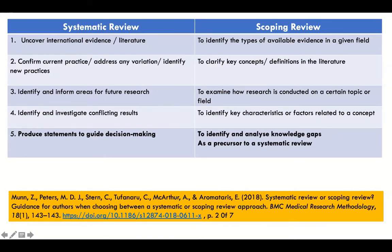Munn and others identify five key parts of a systematic review and contrast them to a scoping review. A systematic review has to uncover very broad international evidence that confirms current practice or addresses variation and identifies new practices. It has to inform areas for future research, identify conflicting results, and produce statements to guide decision-making. If you have to make a selection between processes, protocols, or interventions, you want to do a systematic review.